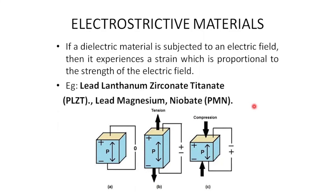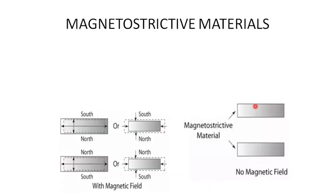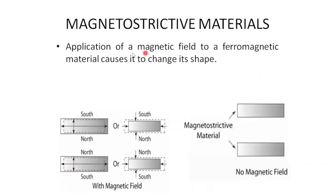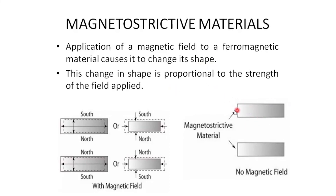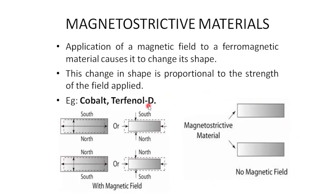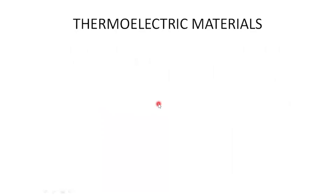Magnetostrictive materials are ferromagnetic materials that change shape when subjected to a magnetic field. The shape change is proportional to the strength of the applied field. Examples of magnetostrictive materials include cobalt and terbium-D (Terfenol-D).